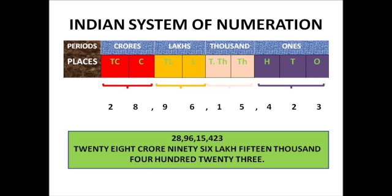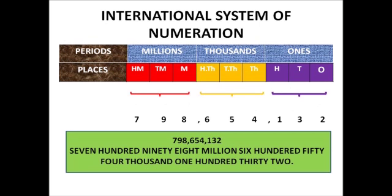I told you that if the thief tells his boss 'I have got around twenty crore or thirty-five crore,' he is Indian and giving the amount according to the Indian system of numeration. Now if the thief tells his boss 'I have got around twenty million or thirty million in my bag,' he is a foreigner giving the amount according to the international system of numeration, which is used internationally.